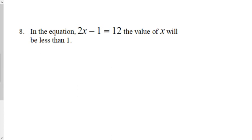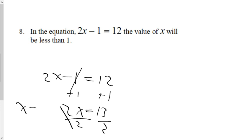Finally, question 8: In the equation 2x - 1 = 12, the value of x will be less than one. Let's just go ahead and figure this out. We're going to solve it: 2x - 1 = 12. Add one to both sides, 2x = 13. Is my answer of x going to be less than one? No it's not. Divide both sides by 2, and x will equal 6.5.